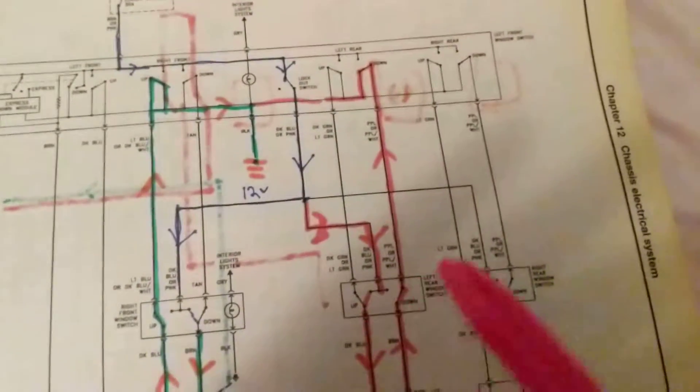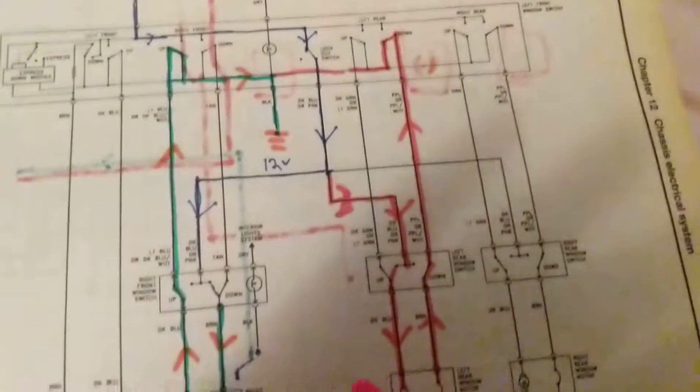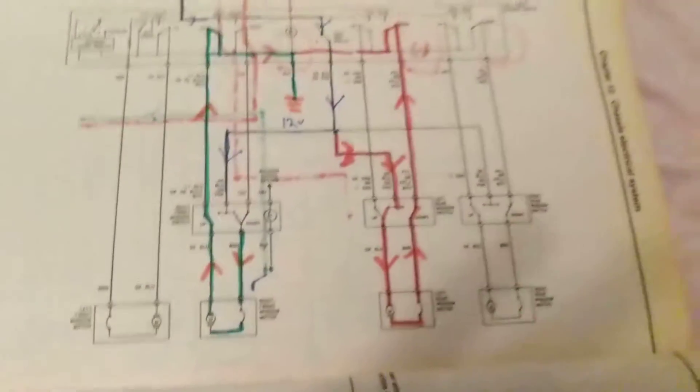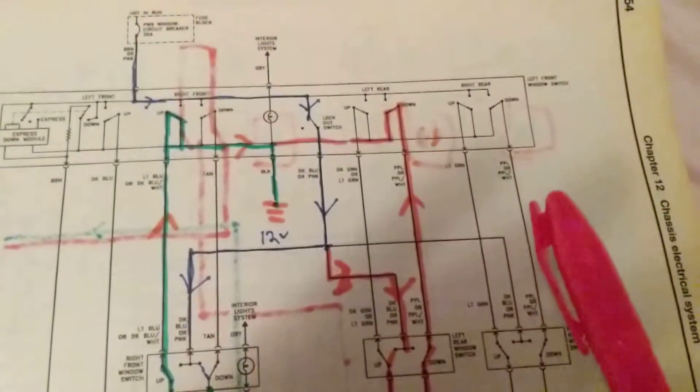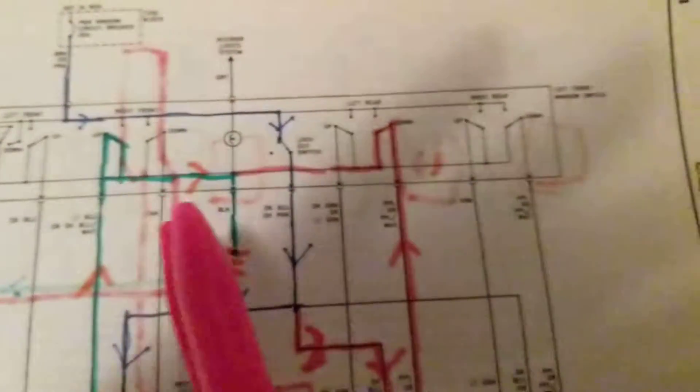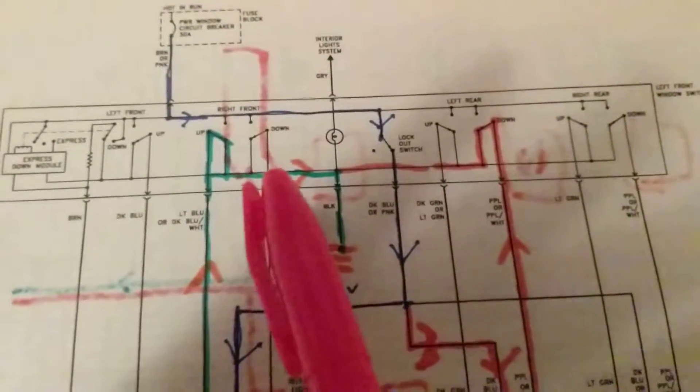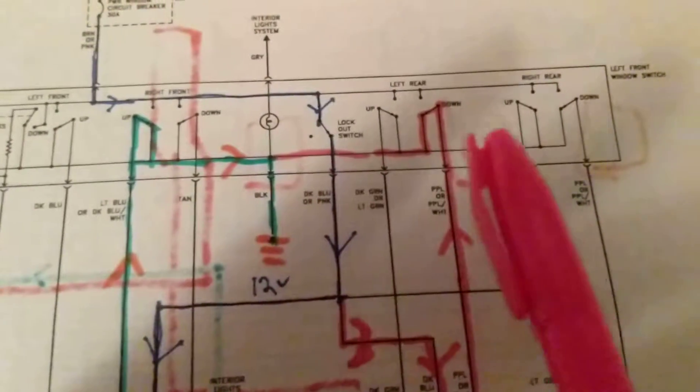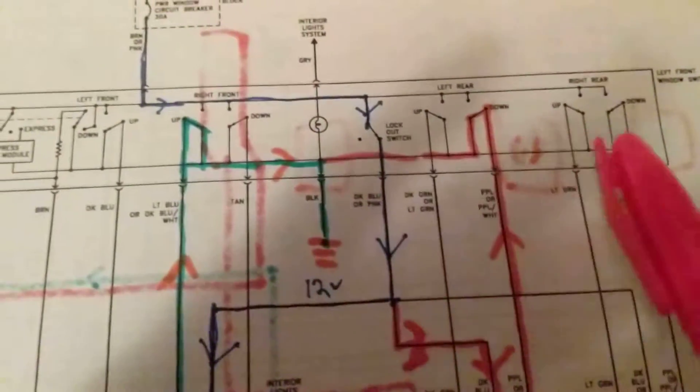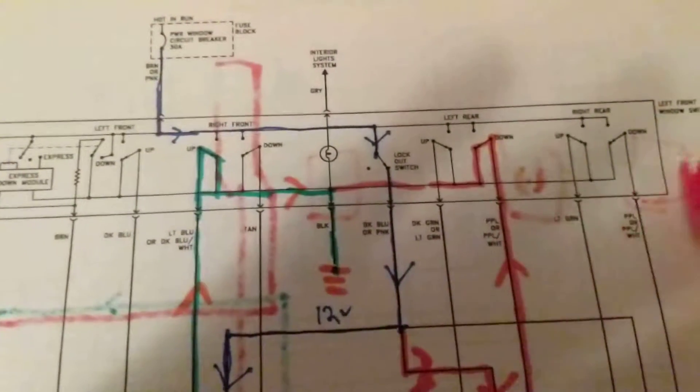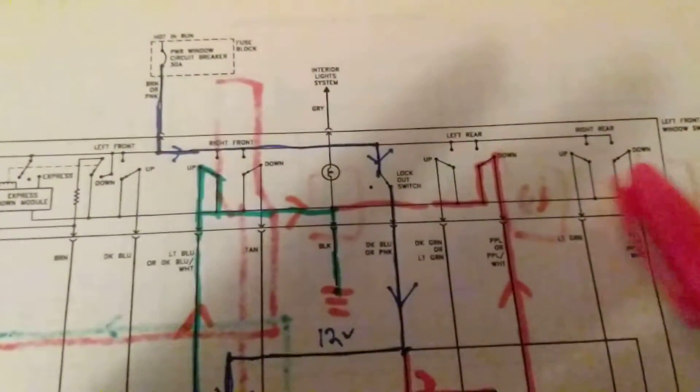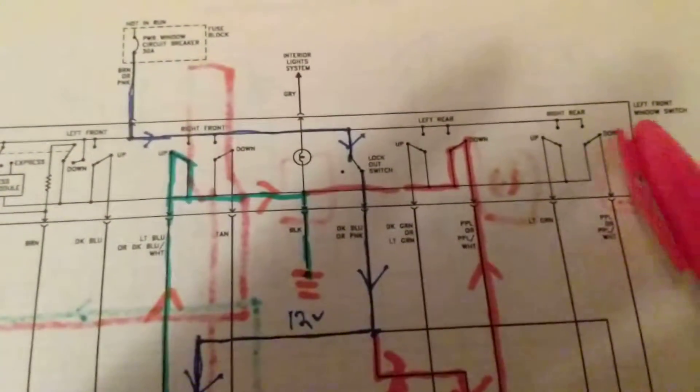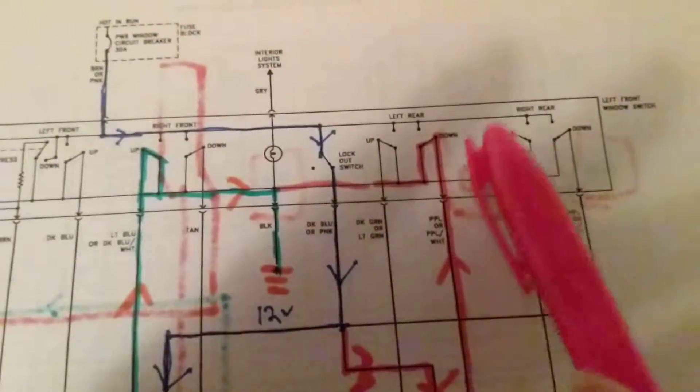Now this is a very complicated schematic. The reason being there's many options available. First of all, if you see over here, window switch. This is by the driver, left front window switch. The driver has the power or the ability to close and open all the windows. Therefore he is in charge, he has like a master switch. So this is like a master switch that he can control all the windows in the front, the passenger and the rear.